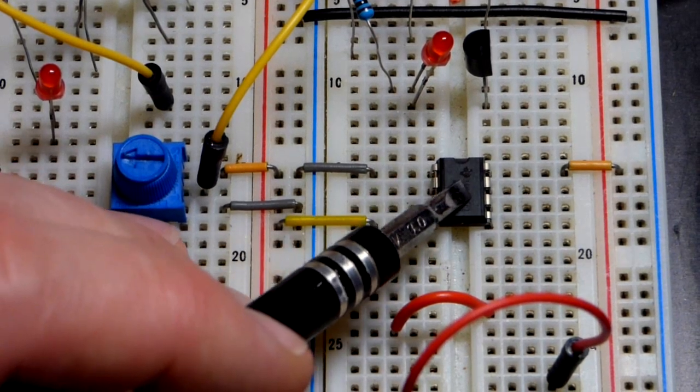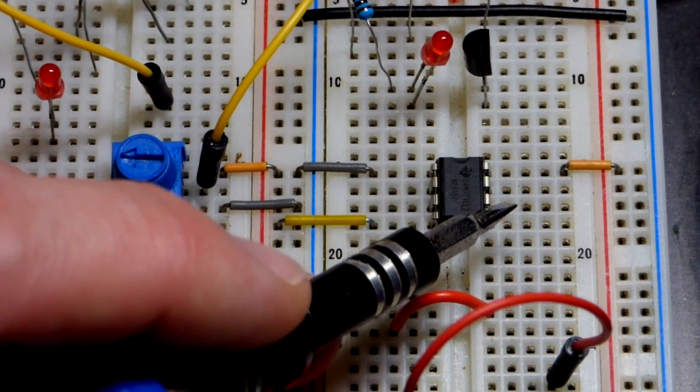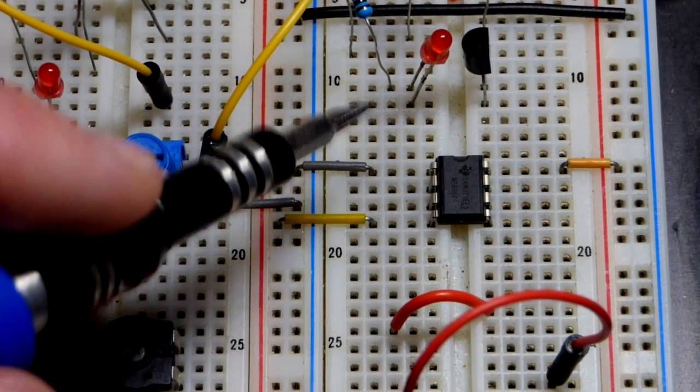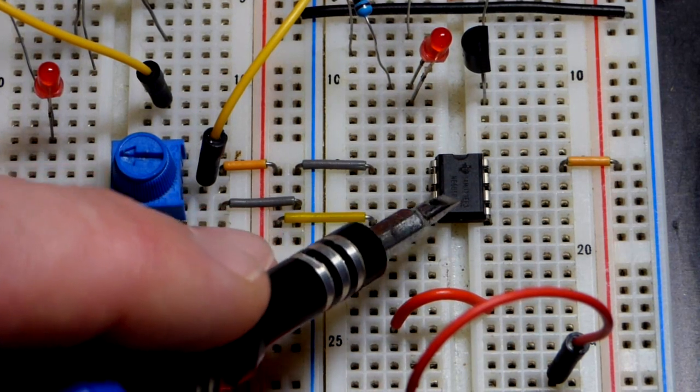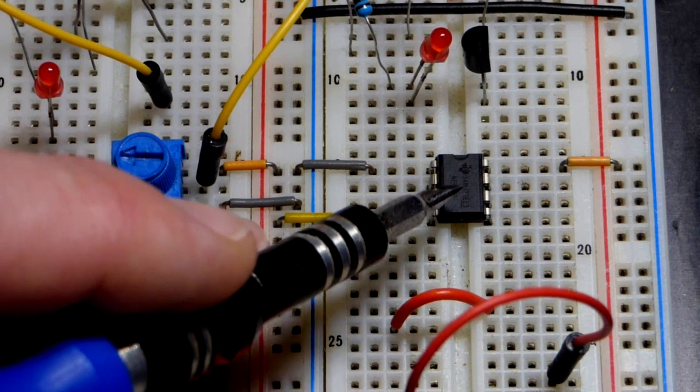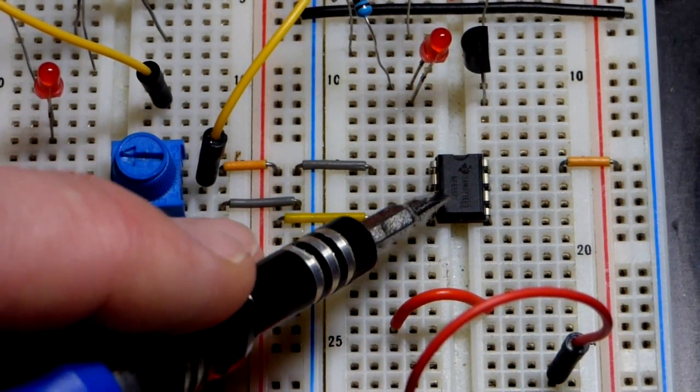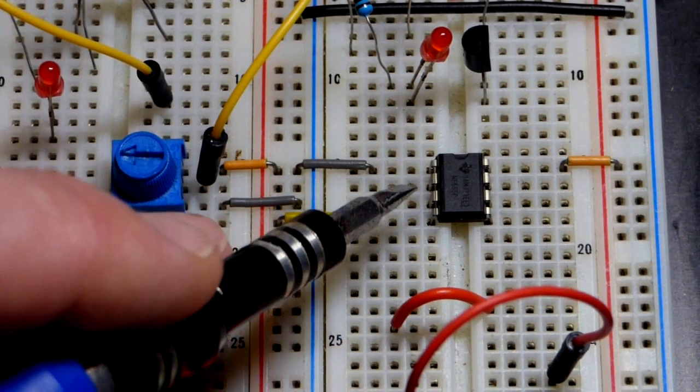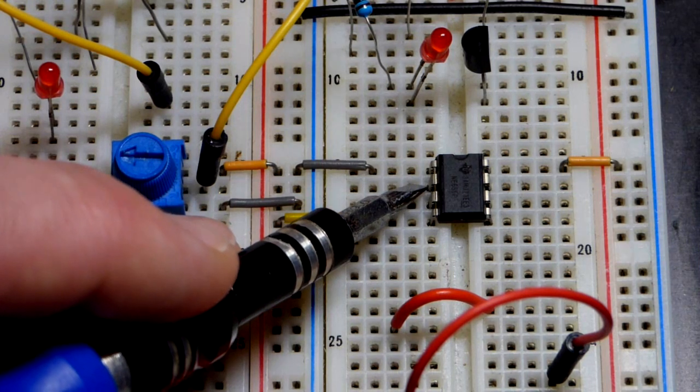So now in this video we're going to look at the 555 timer, primarily the trigger pin and the threshold pin when you tie them together actually. I didn't make a diagram for this, I made diagrams of similar circuits and made videos of those. So you can look for my other 555 timer videos, but for this video I'm just going to do a demonstration circuit without a schematic.